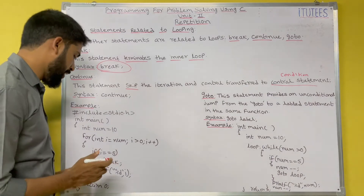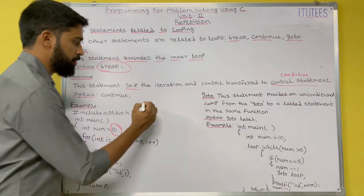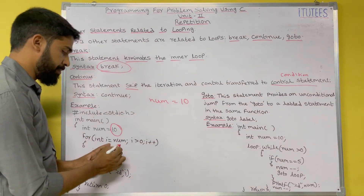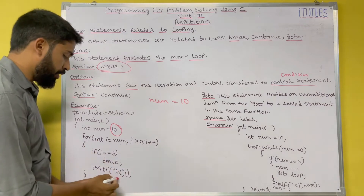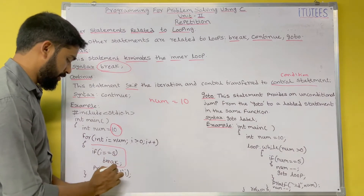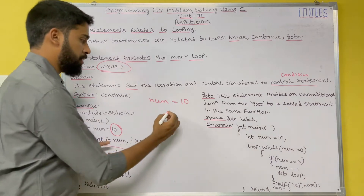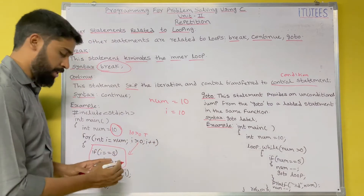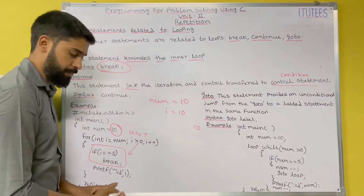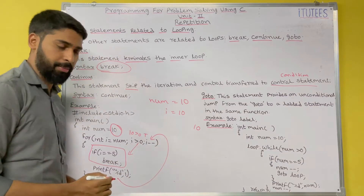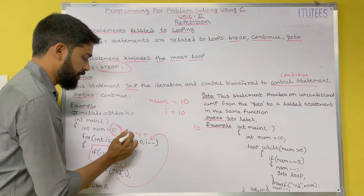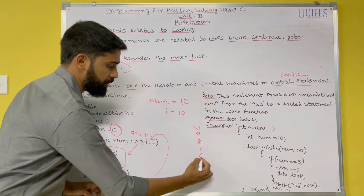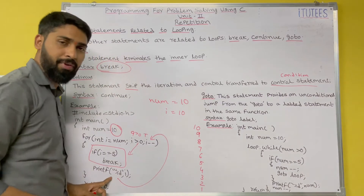Here is the example. The variable num equals to 10. There is a for loop: int i equals num, i greater than 0, i minus minus. You print the i value. So i starts at 10, and 10 greater than 0 is true. We enter the block and print i. The control goes to the decrement, i becomes 9, then 8, 7, 6, 5, 4, 3, 2, 1.